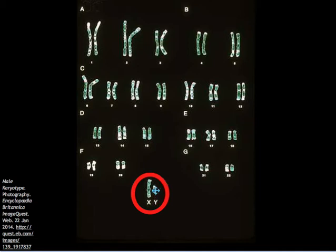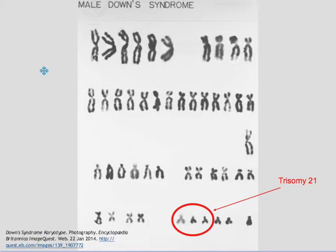But sometimes the process of gamete formation is abnormal, and if fertilization is successful, it can lead to more or less chromosomes in the diploid number.